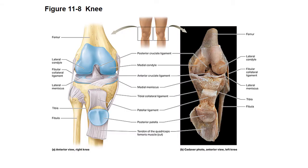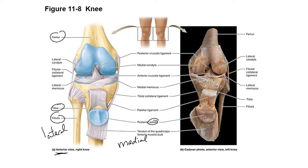Here's your basic knee joint. You have your femur up here, and then you have your tibia and fibula down here — just to get your orientation. We're looking at this from the anterior side. This is the right knee, so the fibula is lateral and this side is medial. Here's your patella. This would be your quadriceps femoris tendon here, and this would be your patellar ligament here.